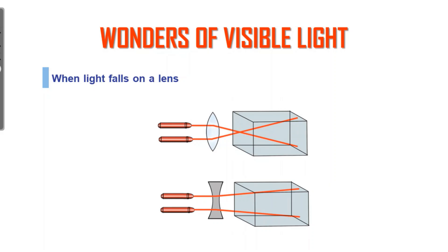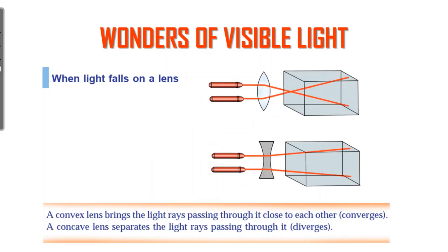How do you use the convex lens? These are the points where light rays converge. We can use the convex lens to focus light. This convex lens brings the light rays passing through it close to each other — that means converging. A concave lens separates the light rays passing through it — diverging.